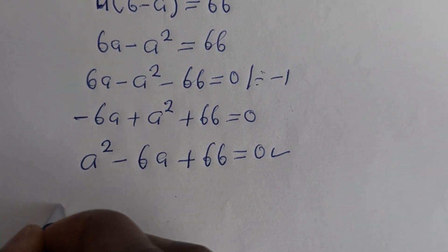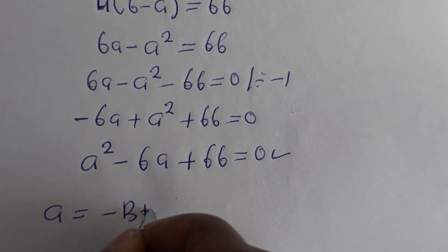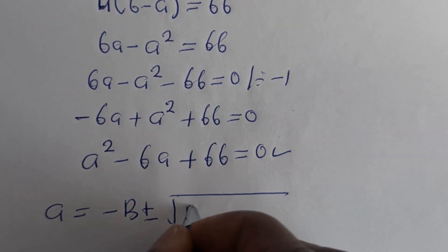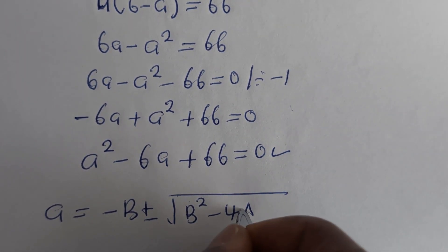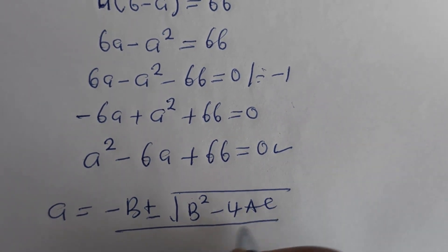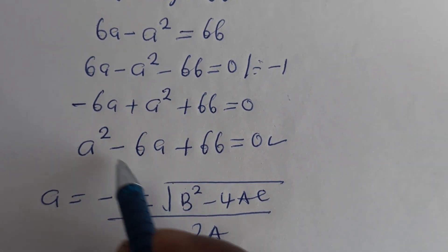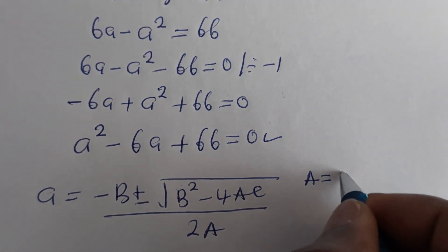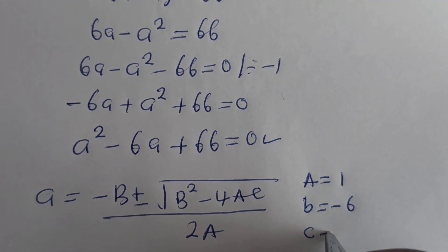Let us solve this using the quadratic formula: A equals minus B plus or minus the square root of B squared minus 4AC, all over 2A. From our equation, A equals 1, B equals minus 6, and C equals 66.